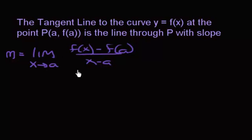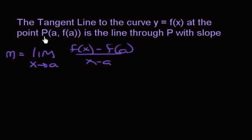In this video, we're going to be talking about the tangent line. The definition of the tangent line is that the tangent line to the curve y equals f of x — that's just going to be some function — at the point P, which has the coordinate pair a comma f of a (you can think of this as x comma y), is the tangent line through P.